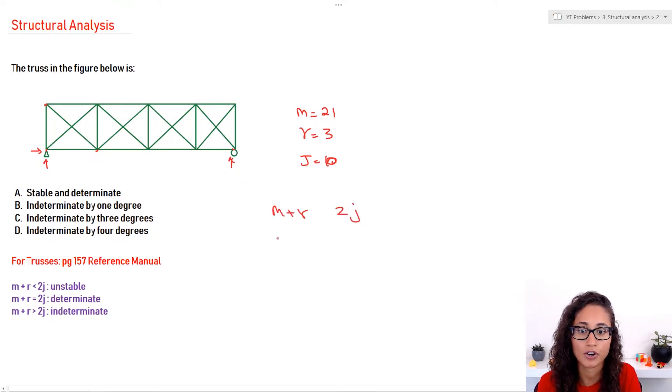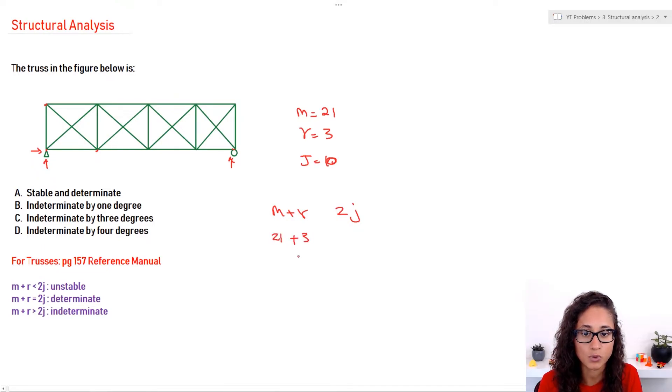So, now let's use our equations. Okay. So, we have M+R is 21 plus 3, right? 21 plus 3, that gives us 24. I have 2 times J, 2 times 10. So, this equals 20. So, I have greater than. So, I have an indeterminate case.